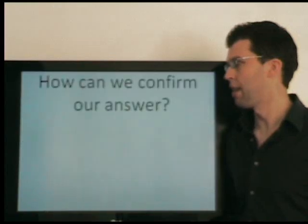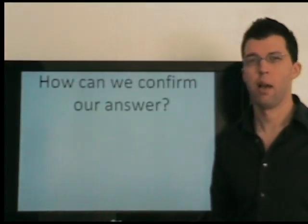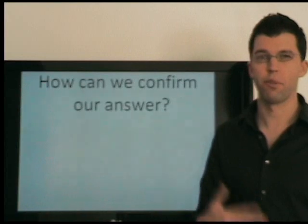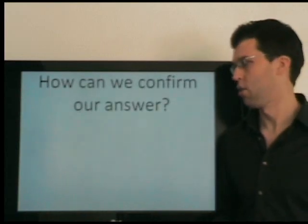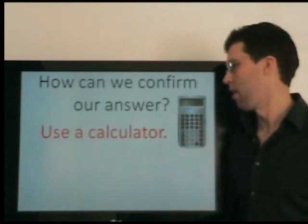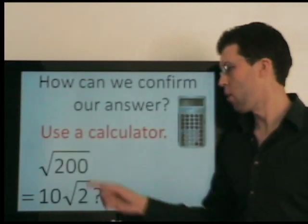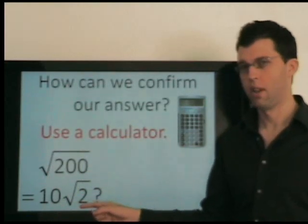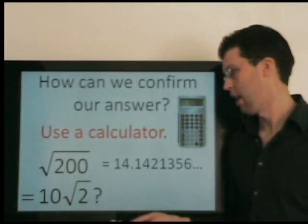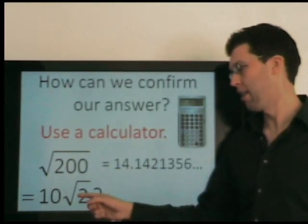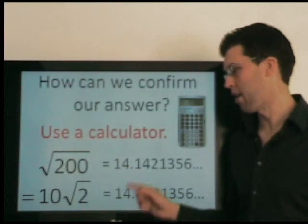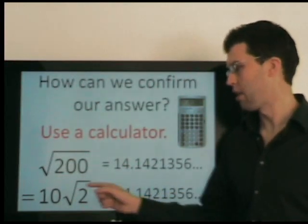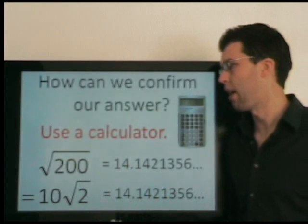Now I'm going to explain all the details. But first, if you're studying on your own, how could you confirm your answer? You can use a calculator. So let's say you want to confirm that you've simplified correctly — you type this in a calculator and type this in a calculator and compare the decimals. In this case, they're the same, so we know we simplified correctly.